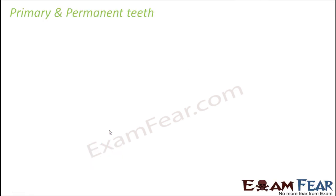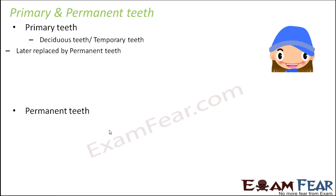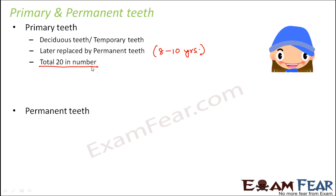I just spoke about the permanent and primary teeth. When you talk about primary teeth, they are the deciduous teeth or the temporary teeth. They are not going to be there throughout. They appear during childhood days, when a baby is born within a couple of months, they start appearing around when the baby is around six months of age, and they later get replaced by permanent teeth somewhere around 8 to 10 years of age. They are total 20 in number.